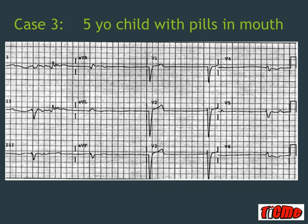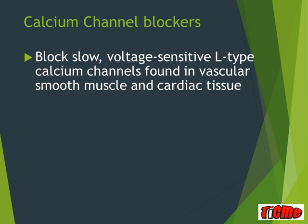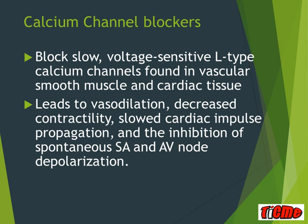Case three: a five-year-old child arrives with pills found in her mouth after visiting grandma's house. The ECG shows a slow, regular rhythm with broad complexes and an absence of P waves. This is an example of a drug where two tablets can kill a child — verapamil. Calcium channel blockers block slow, voltage-sensitive L-type calcium channels found in both cardiac tissue and vascular smooth muscle, producing two effects: vasodilatation and, for the more cardiac-specific agents, negative inotropy, slowed conduction through the SA and AV node, and slowed impulse propagation.